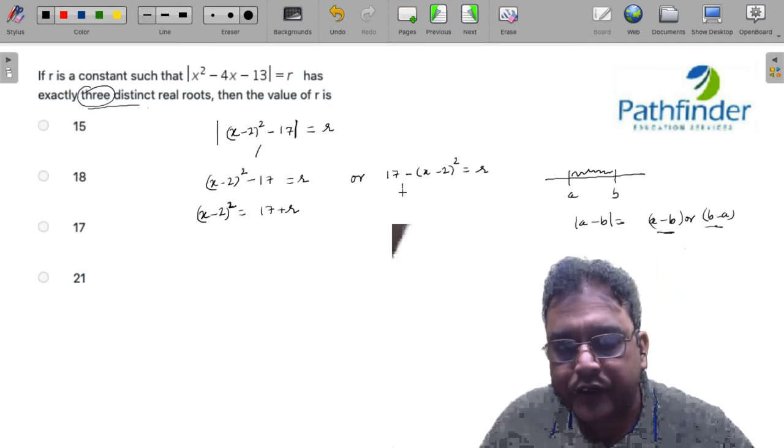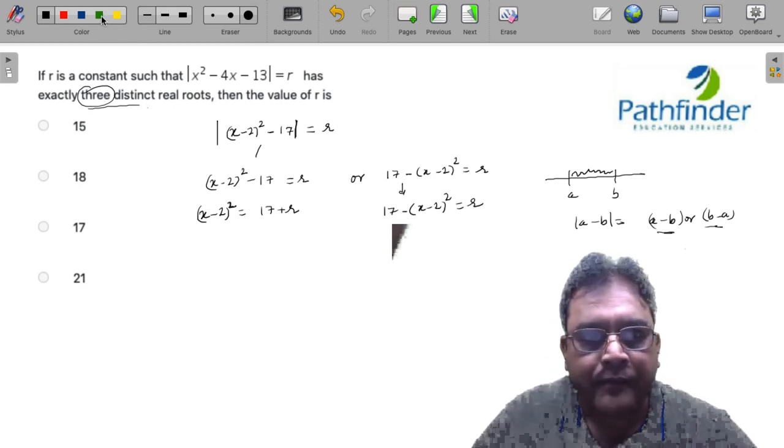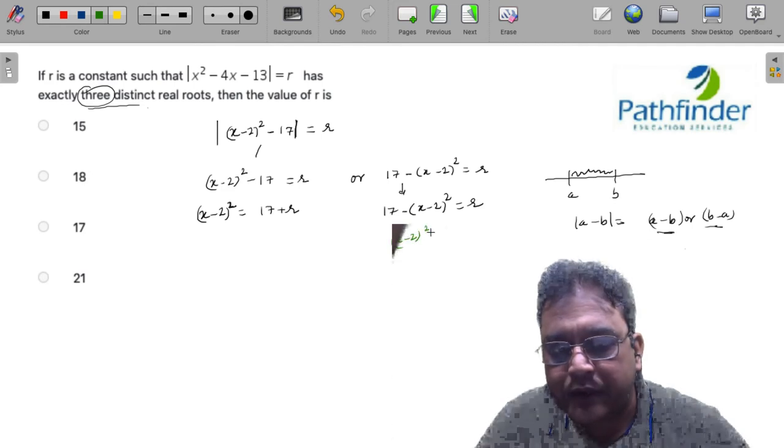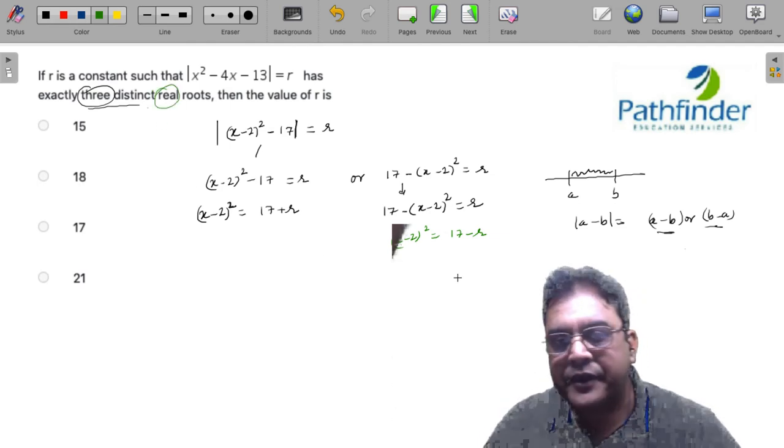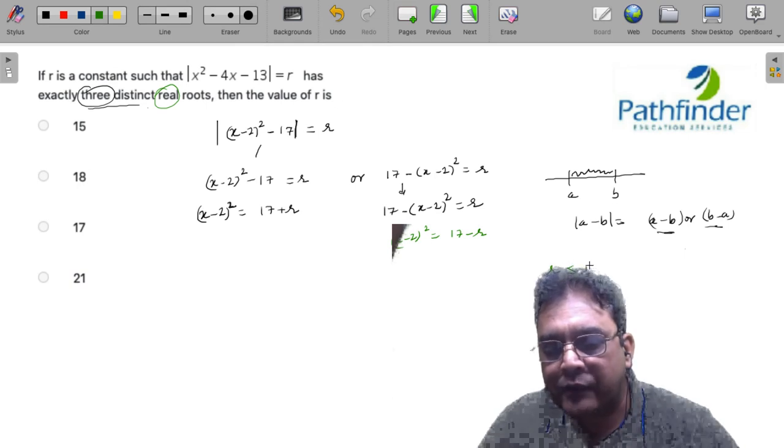The other equation is 17 - (x - 2)² = r. I rewrite this as (x - 2)² = 17 - r. Now since the requirement is that of real roots, r has to be less than or equal to 17.